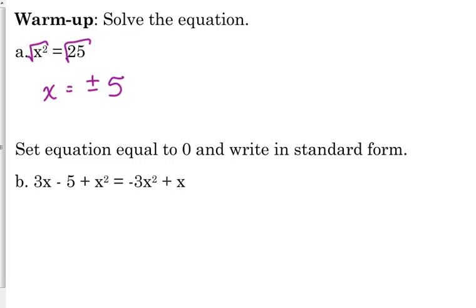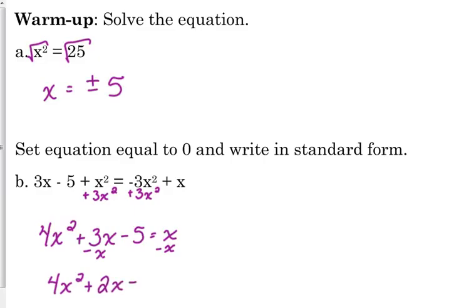Now the second one here, I asked you to set the equation equal to 0 and write in standard form. So that means all this stuff needs to be on one side. We need to move that 3x squared to the right side. And to put it in standard form, I'm going to change the order here. And then there's one more thing that we need to do. We need to subtract the x as well. So 4x squared plus 2x minus 5 is equal to 0.